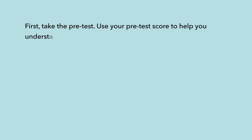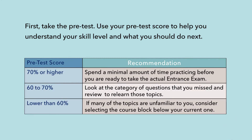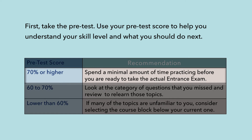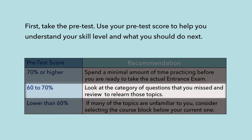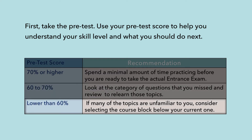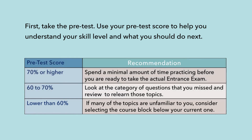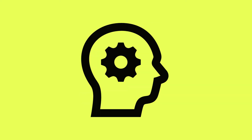First, take the pretest. Use your pretest score to help you understand your skill level and what you should do next. If you get a 70% or higher, you will only need to spend a minimal amount of time practicing before you are ready to take the actual entrance exam. If you score between 60 and 70%, look at the category of questions that you missed and review to relearn those topics. If you scored lower than 60%, there may be many topics that you are unfamiliar with. Consider selecting a course block below your current choice, or know that you're going to need to spend some more time reviewing. After you take the pretest, write down the topics that you missed so you know what topics you need to review.